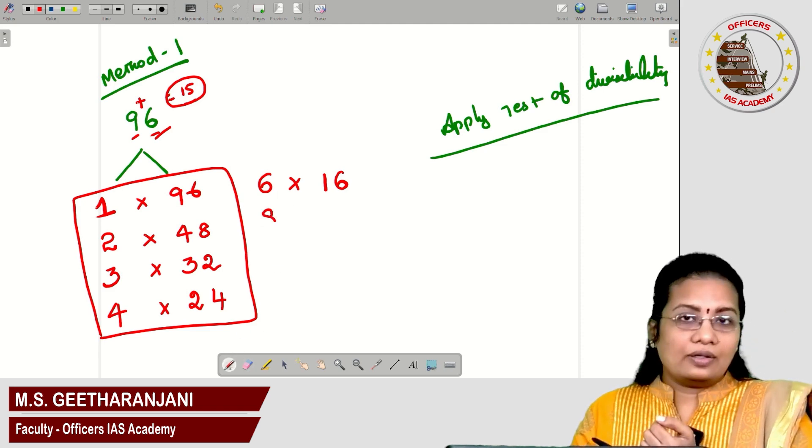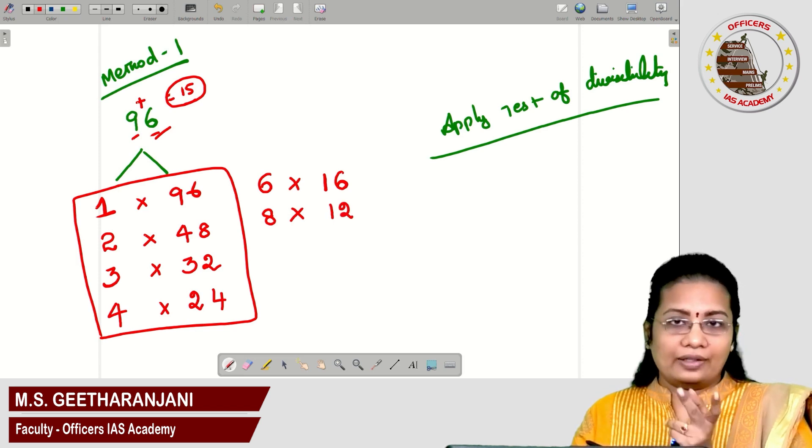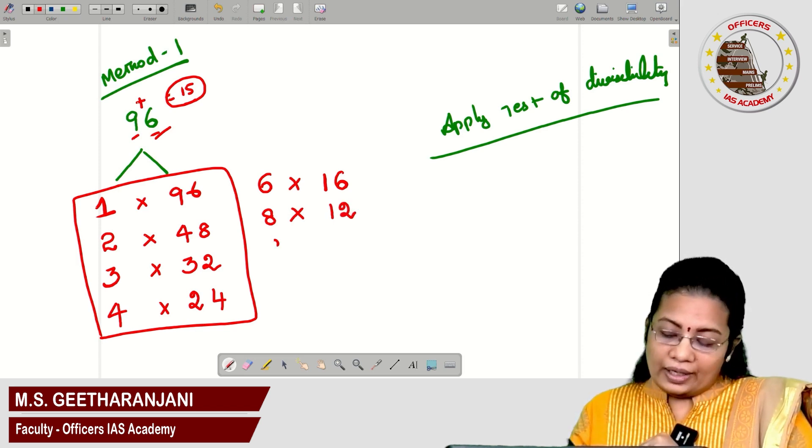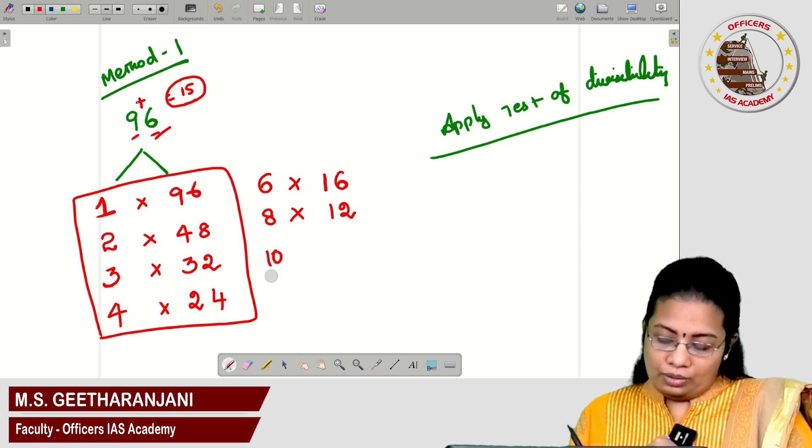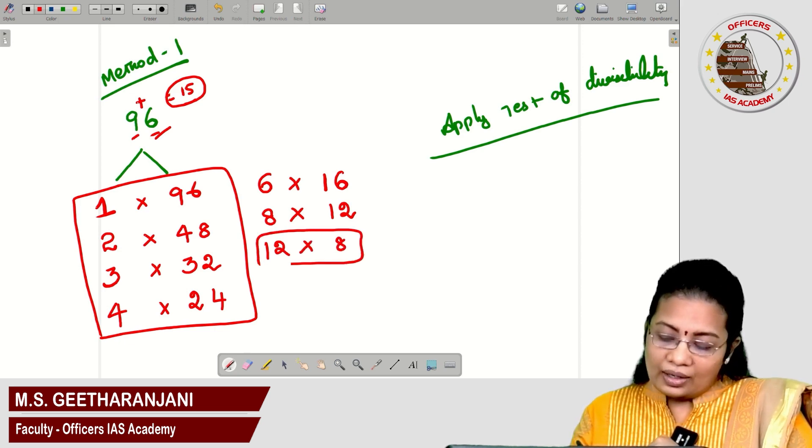Next number 8. 8 into what is 96? 8 into 12. 8 times 12 is 96. These many sets as of now I have got. 9 I am checking, 9 is not divisible. 10 I am checking, 10 is not divisible. 11 is also not divisible. Again 12. 12 into what? 8. Here the numbers are repeating.